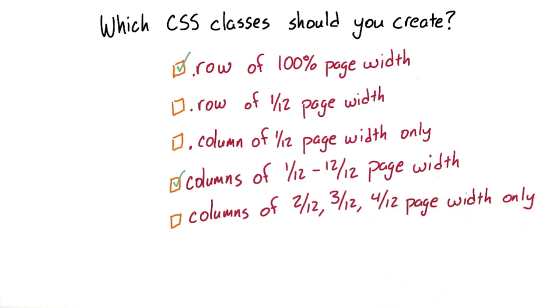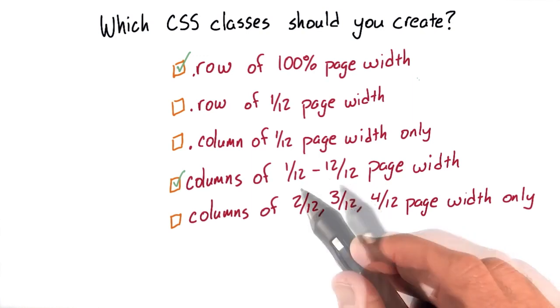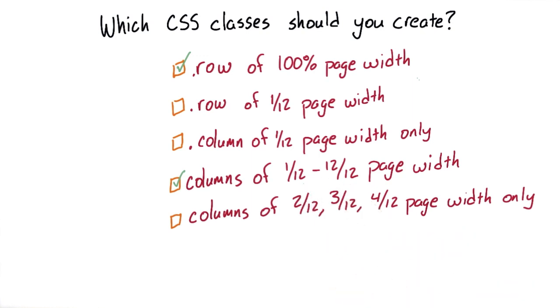we'll be able to create content in columns that takes up as much or as little of the grid as we'd like. This means that, of course, this last answer can't be right, because only creating these three classes won't give us enough flexibility.